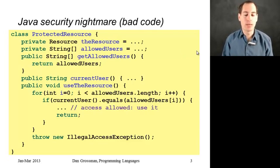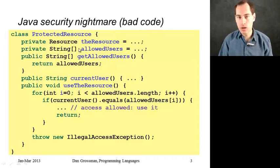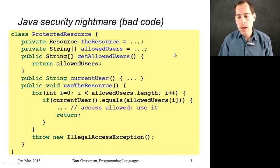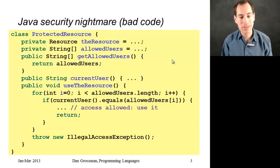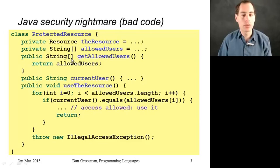I want some people to be able to access it. So I'll have something reminiscent of passwords - the allowed users will just be in this array of strings. If someone is in that list, then they can use the resource. If they try to use the resource and they're not in the list, I'm going to raise an exception. I'm happy to let everyone know who is allowed to use the resource - that's not secret, just the contents of the resource are. So I have this method, get allowed users, that will return the string array.